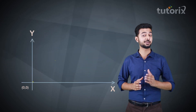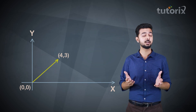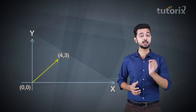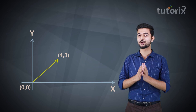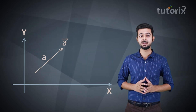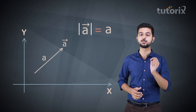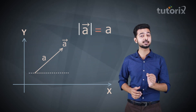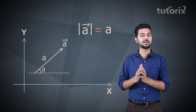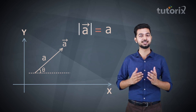So far, we have learned to resolve a vector into its components when the coordinates of its tail and head were given. But what if the coordinates are not given? There is another way to resolve a vector into its components. Consider a vector A as shown here, with magnitude 'a', inclined at an angle theta from the positive x-axis. We will now resolve this vector into its x and y components.